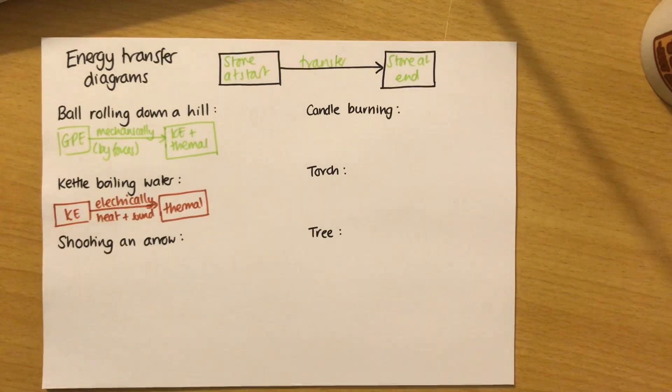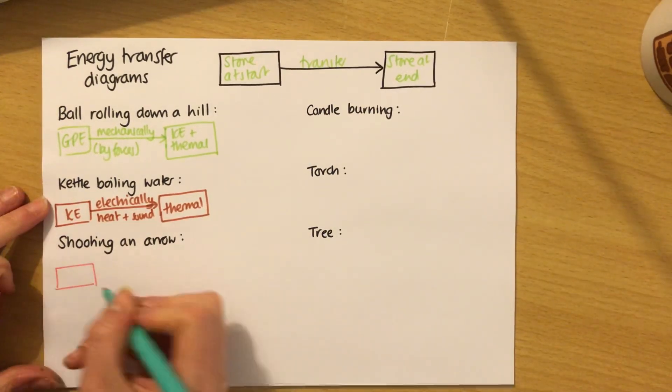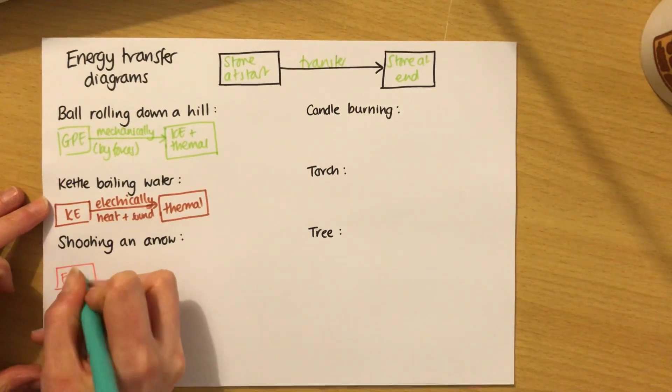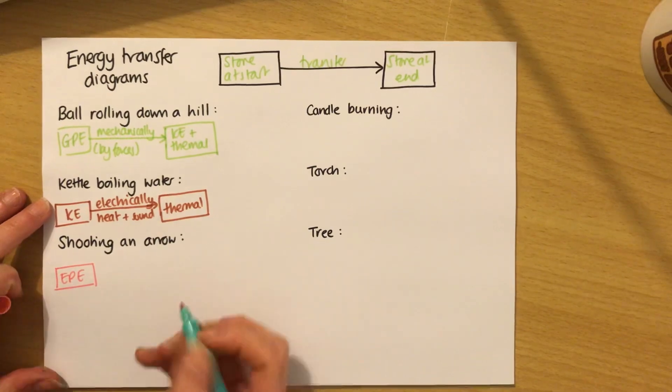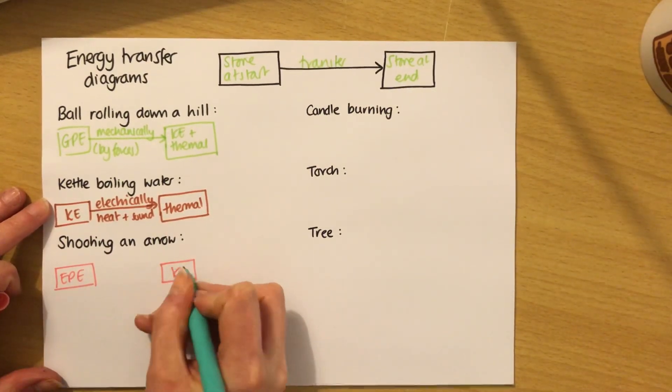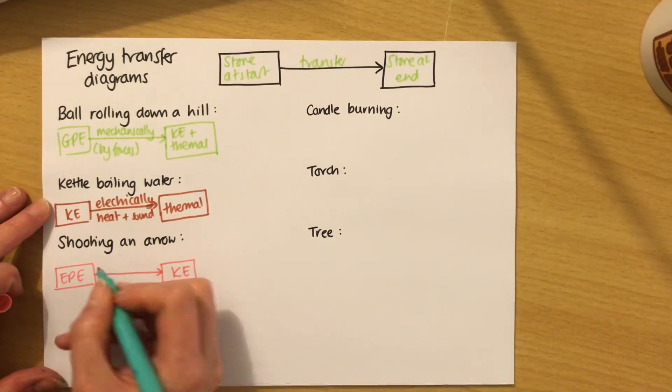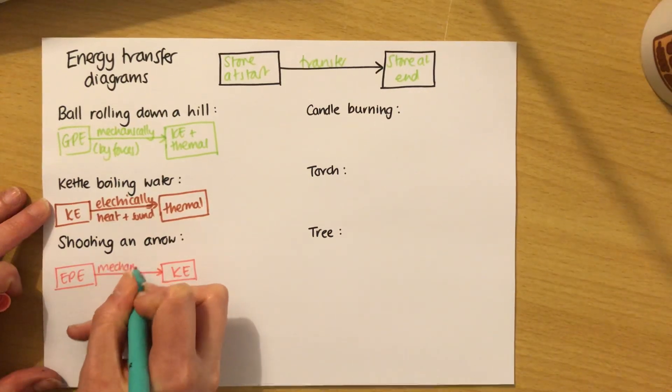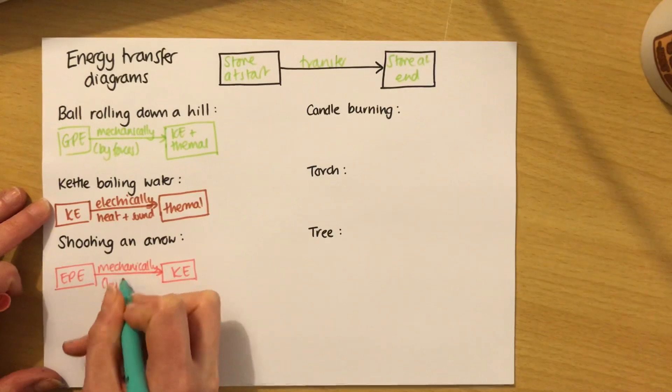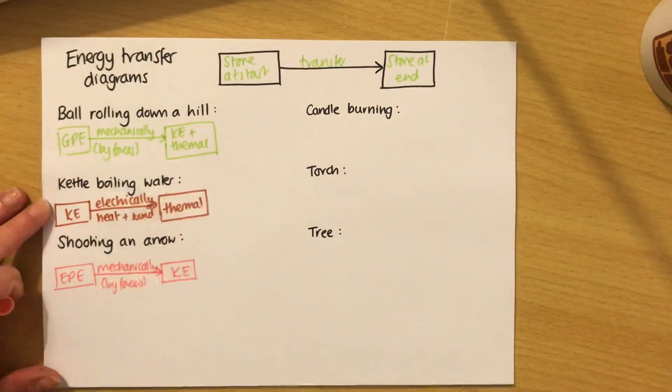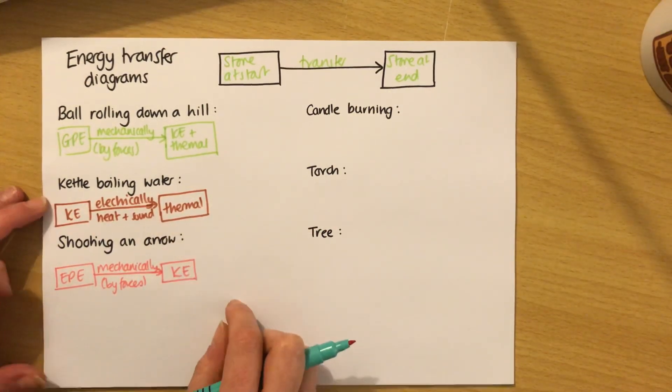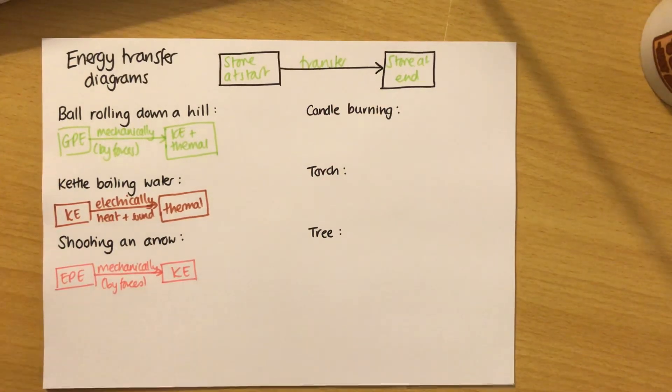Next one, shooting an arrow. I'm going to think about when you hold the bow in its taut position to when the arrow then moves. So when the bow is in its taut position, you've stretched the bow, and so you start with EPE. This is quite an easy one, actually. When the arrow is moving, it's got kinetic energy. And the way that happens is that the bow pushes it, so it moves. So we can say mechanically or by forces. Just like up here where friction gets in the way in the real world, in the real world this won't go on forever. So we could also write thermal energy of the surroundings and the arrow, but I'm going to keep it simple there for now.